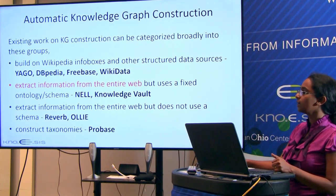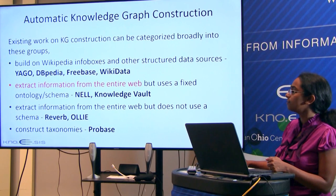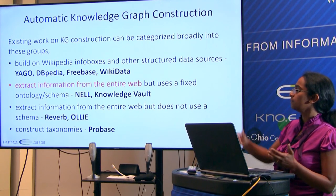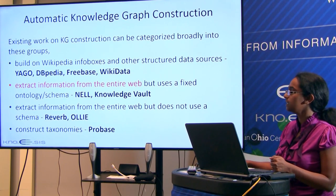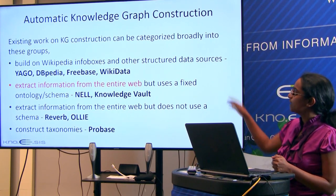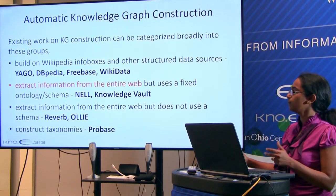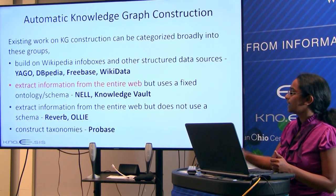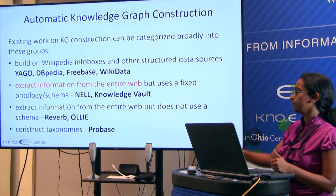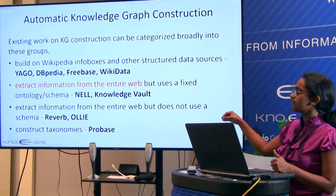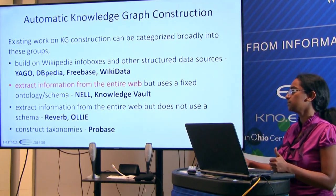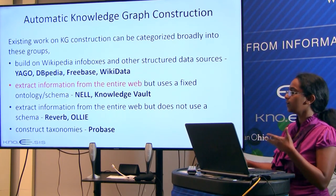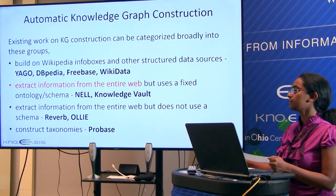There are a couple of automatic ways to construct knowledge graphs. The first uses structured sources such as Wikipedia infoboxes — datasets like DBpedia, YAGO, and Freebase fall here. The second category extracts information from the web with the help of a fixed ontology or schema; NELL belongs here. There is also simple fact extraction from the web without an ontology, and efforts focused on constructing taxonomies. The work discussed today belongs to the second category, extracting information from the entire web with a fixed ontology or schema.